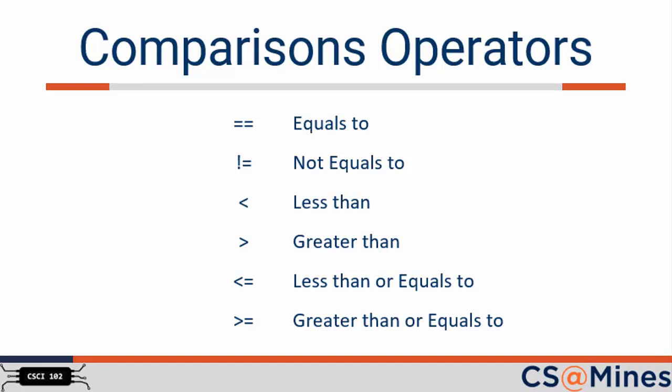We looked at the equality operator in the previous slide. Just like in math, Python has a handful of built-in operators to do comparisons. See the options shown on your screen. Note that the not equals operator has just one equal sign plus an exclamation point. Also note that the less than or equals to and greater than or equals to operators have the equal sign second, just like the way you say it. The value of these comparison operators is that they allow you to execute different code depending on the result of the comparison. In computer science, we call this behavior branching.